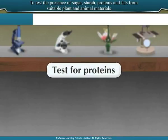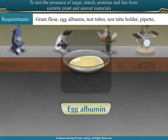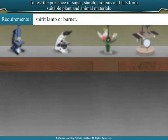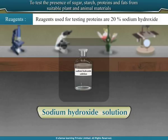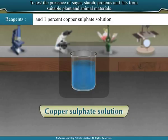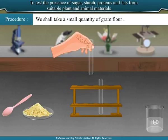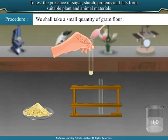Test 3: Test for proteins. For testing the presence of proteins, the following items are required: gram flour, egg albumin, test tubes, test tube holder, pipette, spirit lamp or burner. Reagents used are 20% sodium hydroxide solution and 1% copper sulfate solution. Procedure: Take a small quantity of gram flour, or alternatively egg albumin — the white part of a raw egg — in a test tube.